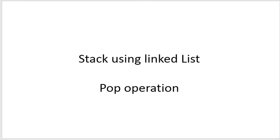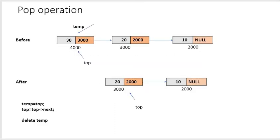In a pop operation, we delete a node from the stack. In a stack, push and pop operations are done at the top end — insertion is done at the top end and deletion is also done at the top end. For example, we have three nodes: 10, 20, 30. The first element inserted is 10, the second is 20, and the third is 30. Since insertion is done at the top end, top is referring to 30.